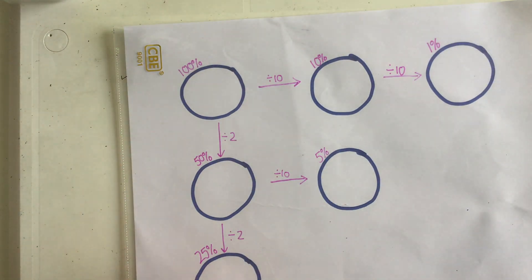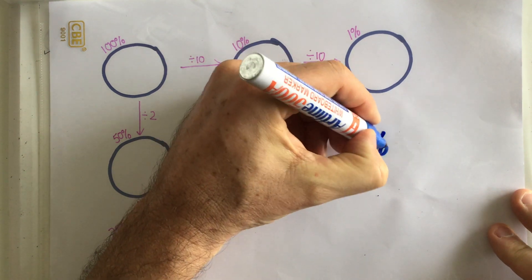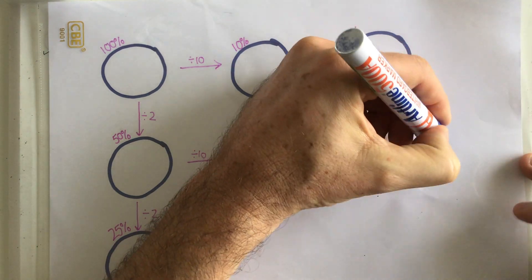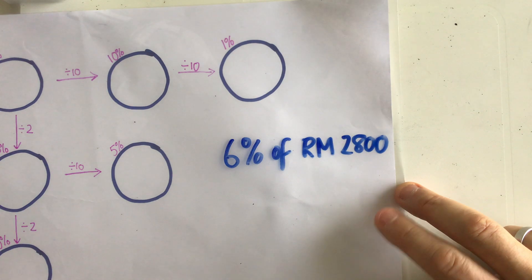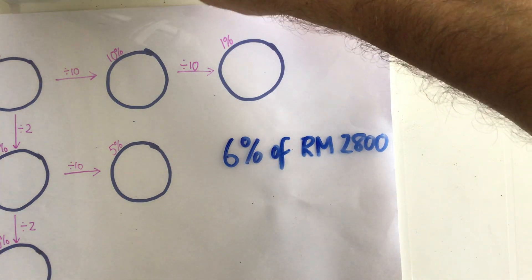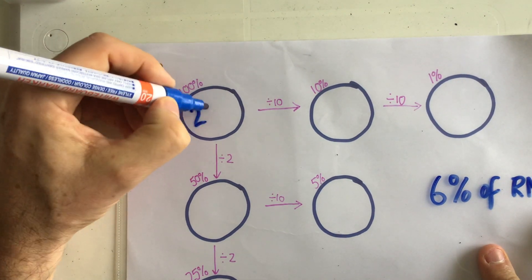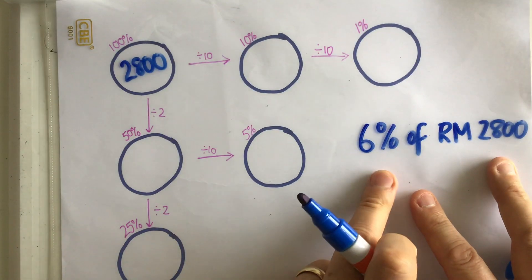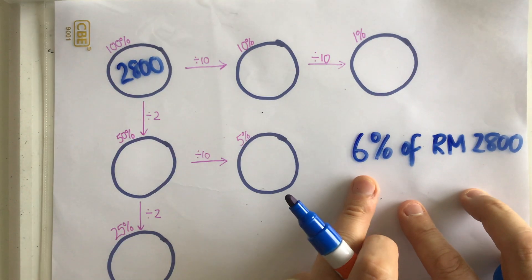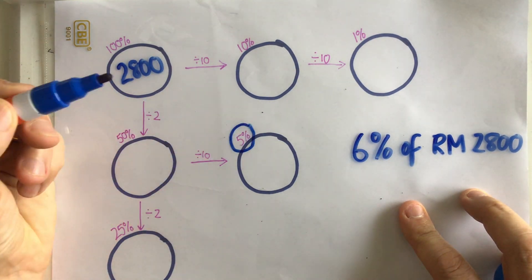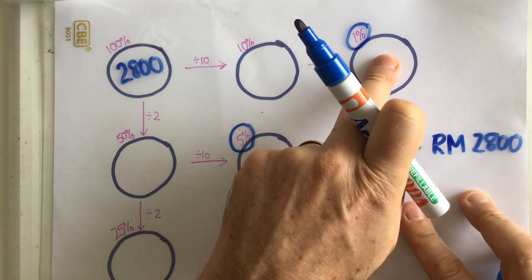So my question originally was to find 6% of 2,800 ringgit. Now, ringgit is currency in Malaysia if you didn't know. To do that I'm going to put my 100% figure here: 2,800. I want to find 6%. Looking at the percentages available to me, I think I'm going to find 5% and then add it on to 1%, so I need to get a figure here and a figure here.